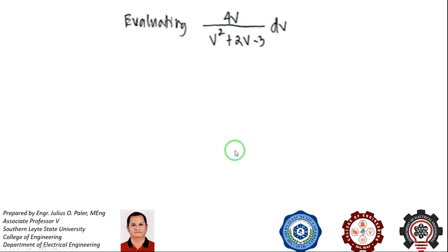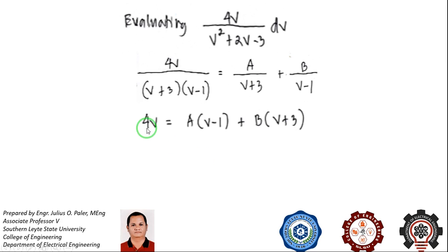So we will evaluate this separately. Based on our denominator, which is factorable by (v + 3) and (v - 1), which are linear factors, then the possible sum of fractions will be a/(v + 3) and b/(v - 1), where a and b will be determined later.